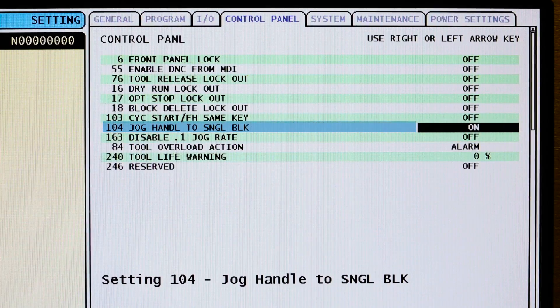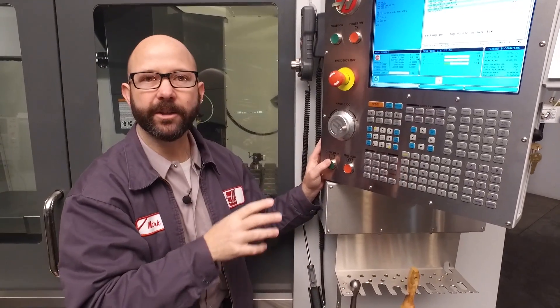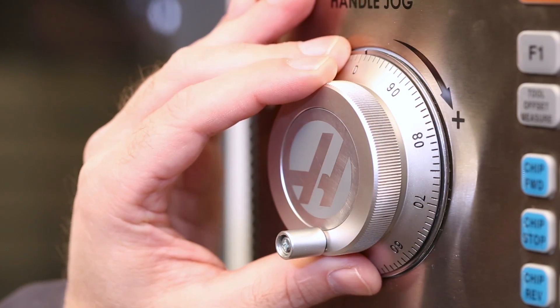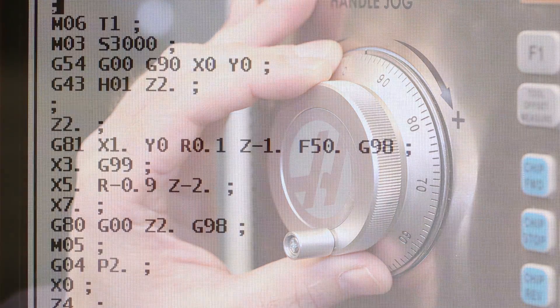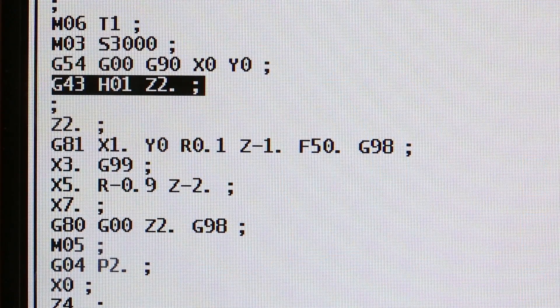Also, we have setting 104, jog handle to single block. When this is set to on, you can use the hand wheel instead of the cycle start button to kind of walk through that program. With each click, it will execute another line of code.